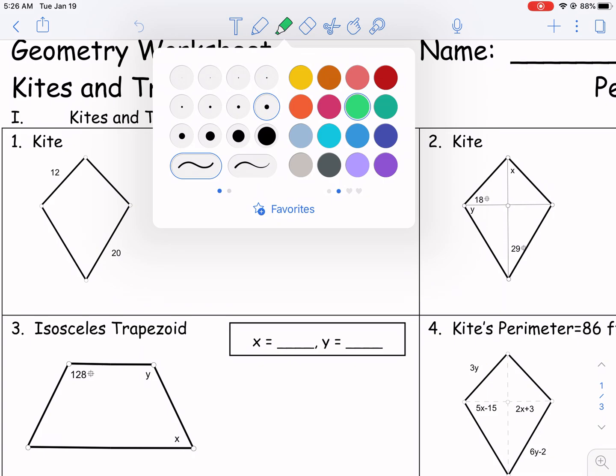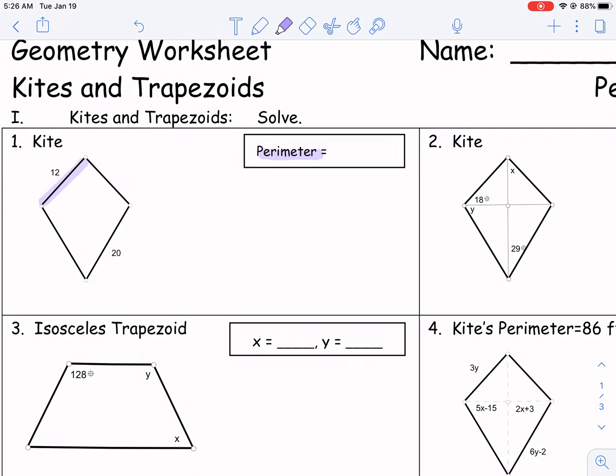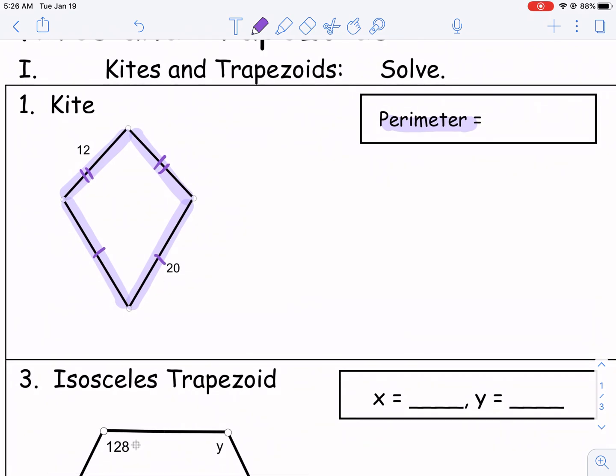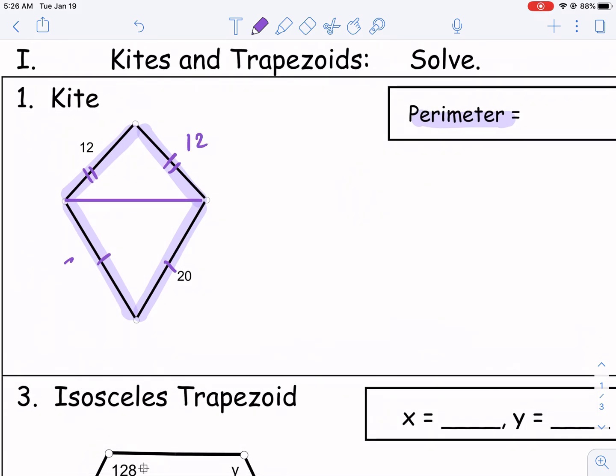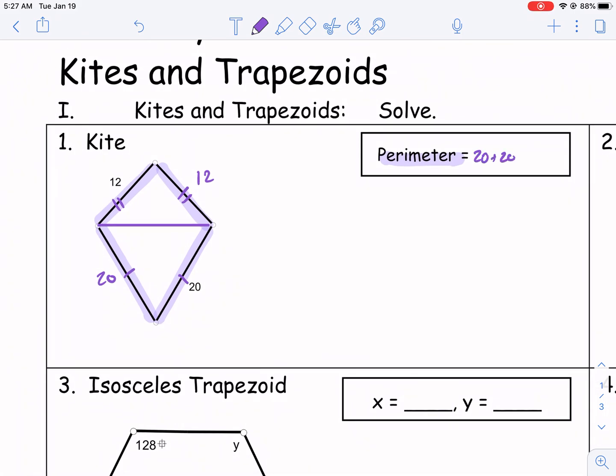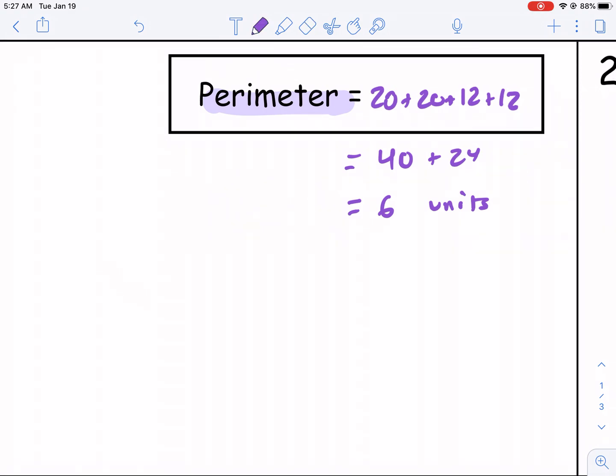We're going to talk about kites and trapezoids and discover some properties as we do these problems. This first one is asking for the perimeter, which is the sum of all the sides of this kite. A kite is defined as a quadrilateral with no pairs of parallel sides and consecutive sides that are congruent. We have two sides right next to each other that are congruent. Based on isosceles triangles, this side is also 12, and we have 20, 20. So we add 20 plus 20 plus 12 plus 12, which is 40 plus 24, equal to 64 units.